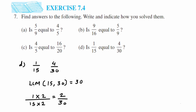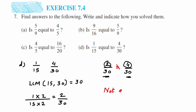Both denominators are now 30. The second number is already 4/30, so no change needed. Comparing: 2/30 and 4/30 — denominators are the same but numerators 2 and 4 are not equal, so the fractions are not equal. As I mentioned, another way is to simply cancel 4 and 30 to get 2/15 and compare directly.